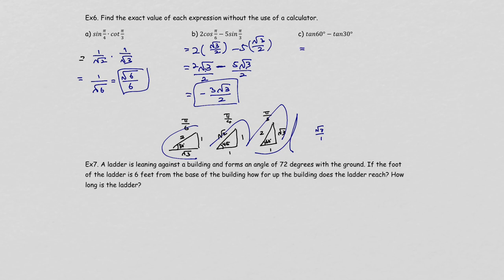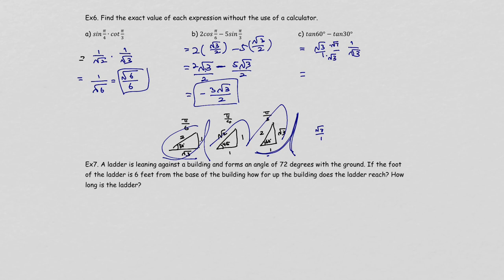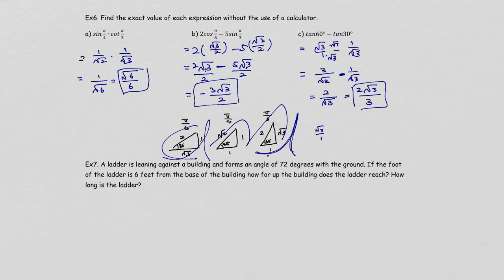Tangent 60 degrees is square root of 3 over 1. Minus tangent 30 degrees, which is 1 over square root of 3. To subtract fractions, get a common denominator: multiply the first fraction by square root of 3 over square root of 3 to get 3 over square root of 3. Then 3 over square root of 3 minus 1 over square root of 3 gives 2 over square root of 3. Rationalizing gives 2 square root of 3 over 3.